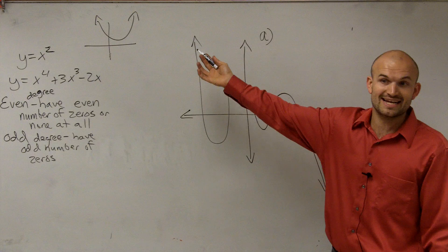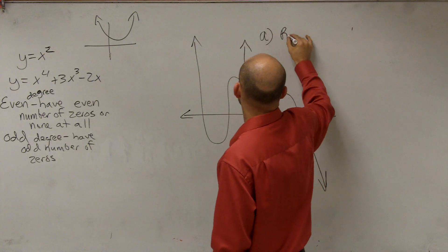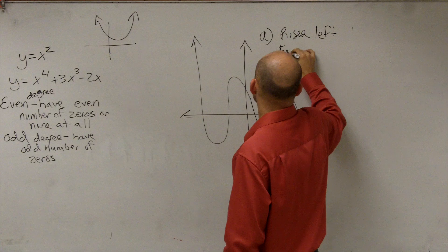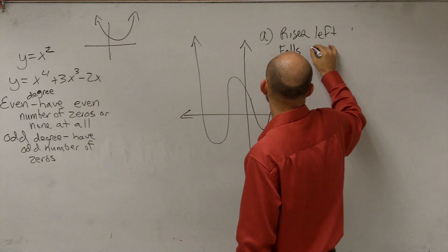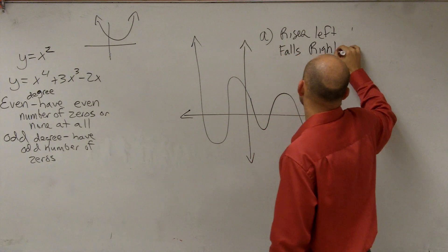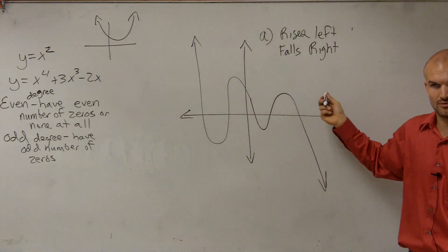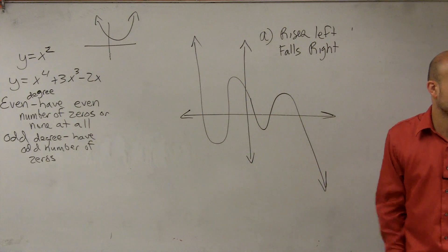the graph is obviously rising to the left. And now the graph is falling, or we're going to say falls right. So as I go to the left, the graph rises. As I go to the right, the graph falls. Pretty basic, right?